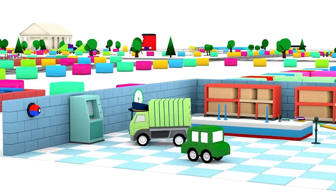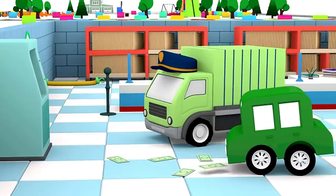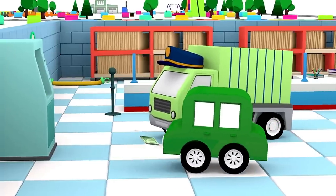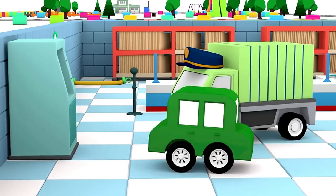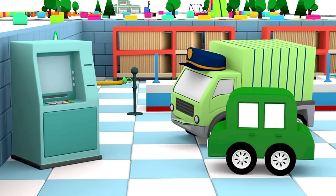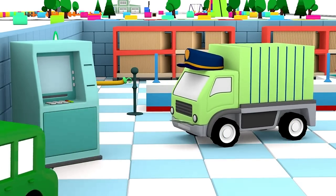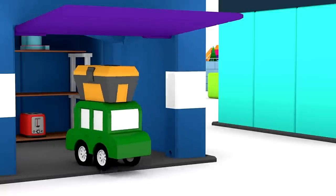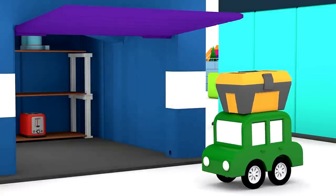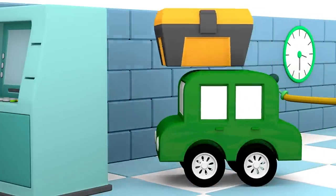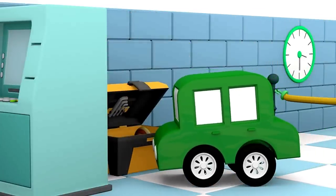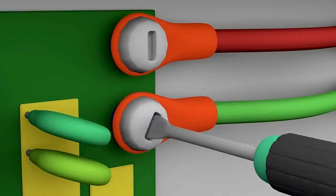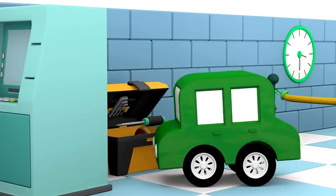The green car is at the bank. The bank machine is broken. It's spitting out money. Hold this truck. We will fix it now. The little car is using the toolbox. A screwdriver. Screw, screw. A little more. All done.